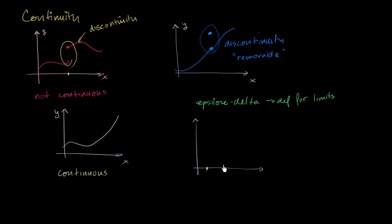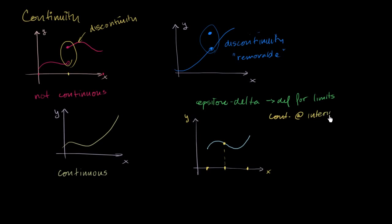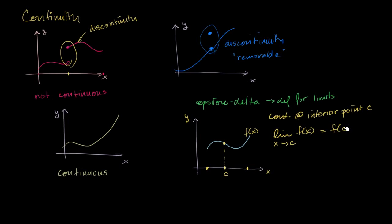So let me draw an interval right over here, between that x value and that x value. This is the x-axis, this is the y-axis. And let me draw my function over that interval — it looks something like this. We say that a function is continuous at an interior point. An interior point is a point that's not at the edge of my boundary. This would be an end point, and this would also be an end point. Continuous at interior point c means that the limit of our function as x approaches c is equal to the value of our function, f of c.